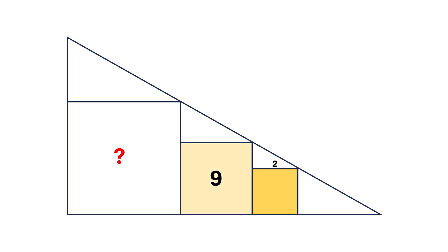Next, look at the middle square. Its area is nine. So each side must be the square root of nine. That's three units.